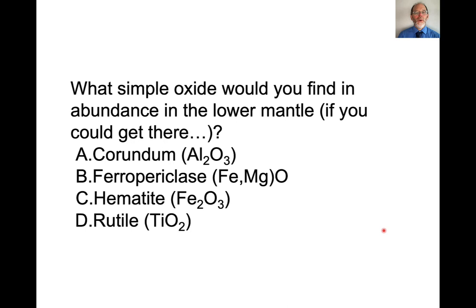So what simple oxide would you expect to find in abundance in the lower mantle? Yes, ferropericlase is the really important one. It is true that these other oxides, or maybe there are higher pressure polymorphs of them, but it is true that these other oxides might exist, but it's really ferropericlase that's going to be the most abundant.